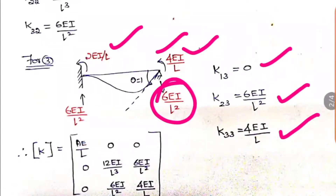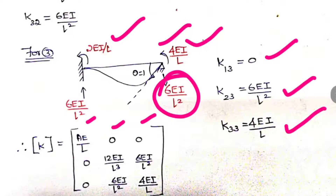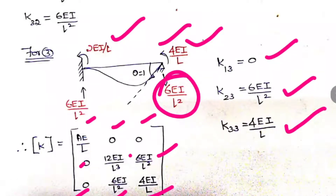Now we have all elements of the stiffness matrix. Arranging them in order — K11, K21, K31 in the first column, K12, K22, K32 in the second, and K13, K23, K33 in the third — gives the complete stiffness matrix. You can also factor out EI/L as a common term to simplify the expression.